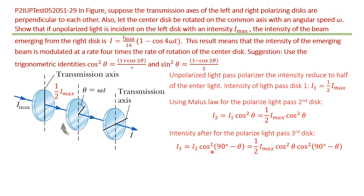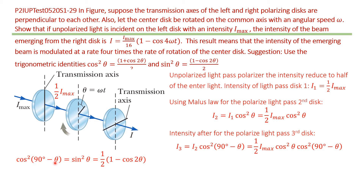Substituting I₂ equal to one half I-naught cosine squared theta, we use the identity that cosine of (90° minus theta) equals sine theta. Applying the identity sine squared theta equals one half times one minus cosine 2-theta.